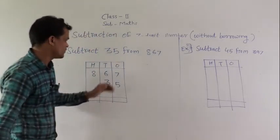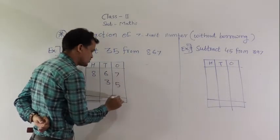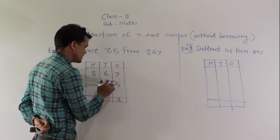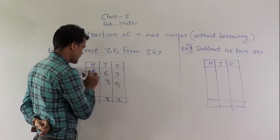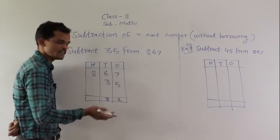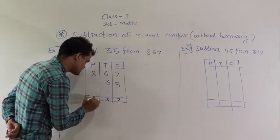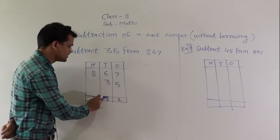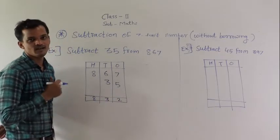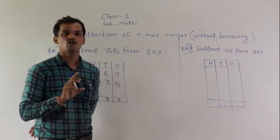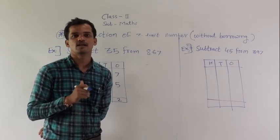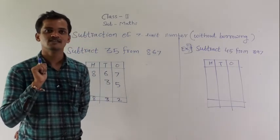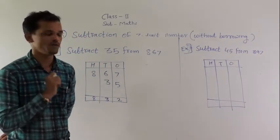Now, subtract the values. 7 minus 5, 2. 6 minus 3, 3. And here 8, there is no any digit. So, write that 8 as it is downside. So, 832 is the answer, and the answer of the subtraction example is called the difference. Remember this.